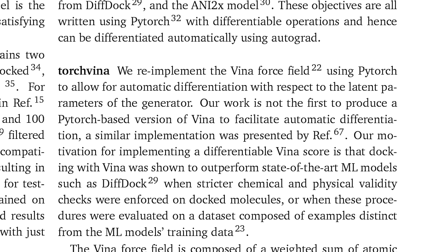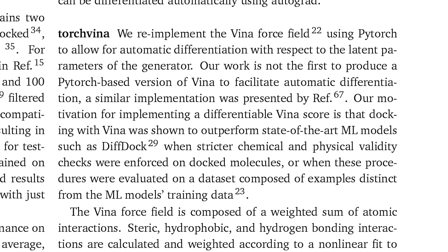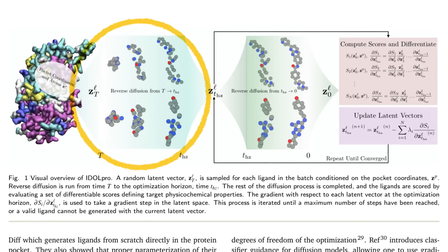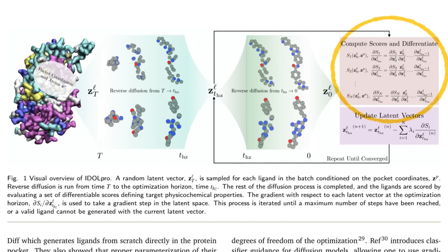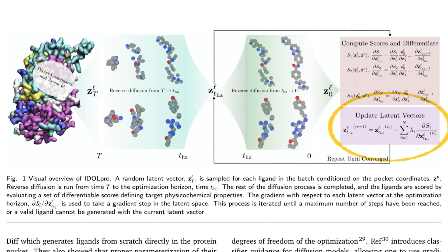We re-implemented the VenaScore in PyTorch so we can get gradients directly with respect to the score to guide the diffusion model. The process works by rolling out diffusion up to some optimization horizon, freezing the latent vectors at that point, then rolling out the rest of the diffusion process to generate a novel ligand. We evaluate that ligand with the differentiable scores, take the gradient with respect to the latent vector at the time horizon, and take a step in latent space — so the next rollout produces a ligand with better binding affinity and synthetic accessibility. We iterate this process to produce ligands with both properties optimized.